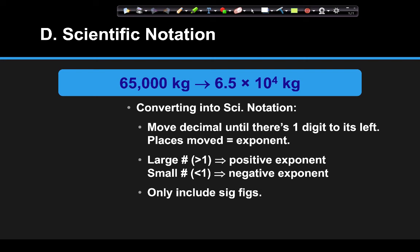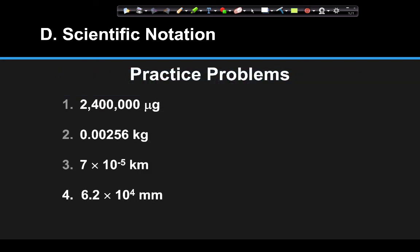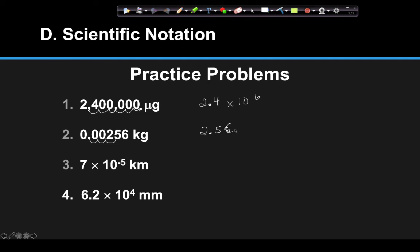Scientific notation also only includes significant figures. To convert into scientific notation, take the decimal point and move it until there's only one digit to its left. For example, moving it six times gives 2.4 times 10 to the sixth — positive because the original number is larger than one. For a small number less than one, move the decimal point three times and it becomes negative: the exponent is 10 to the negative third, because the original number is less than one.